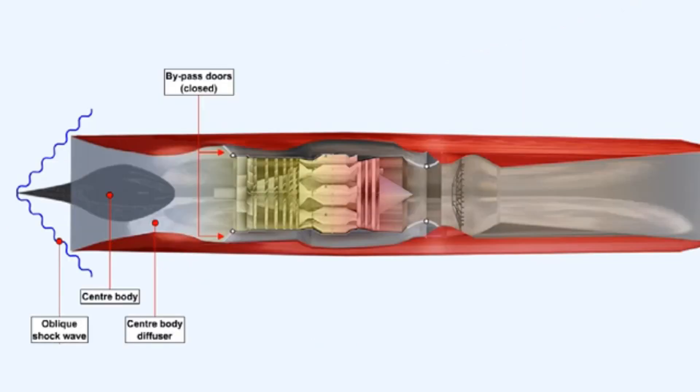A more elaborate type of diffuser is the center body design, which has a sharp center body sometimes called a spike. The spike strikes the airflow producing an oblique shock wave, and will frequently be designed to produce several weak shock waves rather than one strong one. The inlet geometry is then such that the air is drawn into the engine inlet at right angles to the shock wave, and the resulting flow is subsonic, as happens in the simple convergent-divergent diffuser.